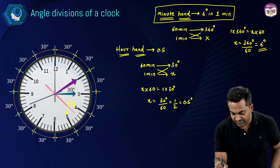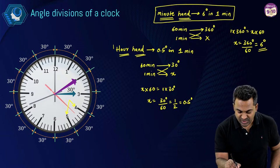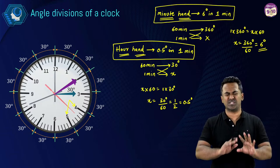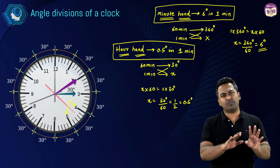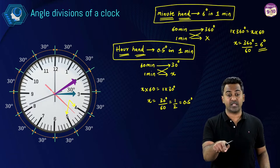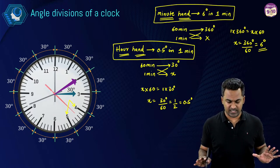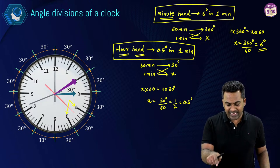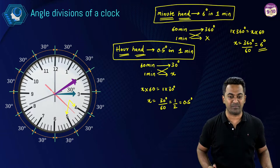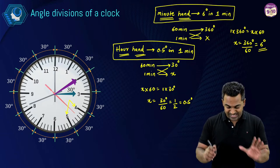The hour hand covers 0.5 degrees in one minute. Make sure you write this down — you will use this to solve pretty much all the questions. The minute hand covers 6 degrees per minute and the hour hand covers 0.5 degrees per minute. These are the key fundamentals. Always watch these sessions with paper and pen by your side.